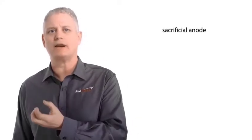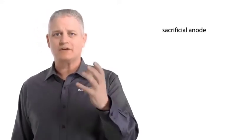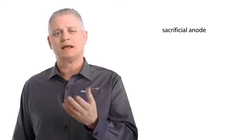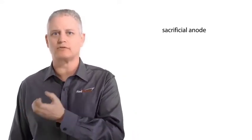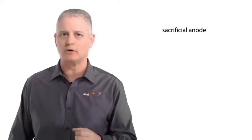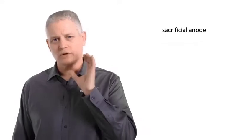One type of cathodic protection is where you have what's called a sacrificial anode. You've got something like zinc or magnesium, some type of metal that's actually designed to oxidize or rust. You're going to sacrifice that piece of metal, so that's what we call that sacrificial anode.